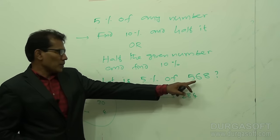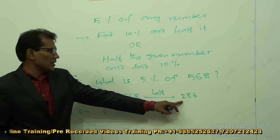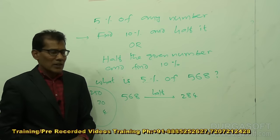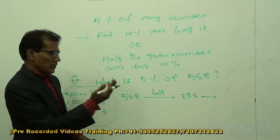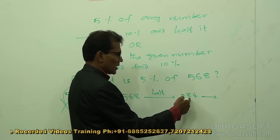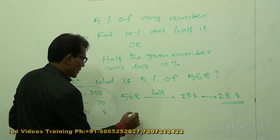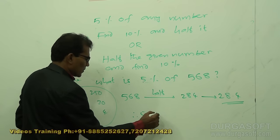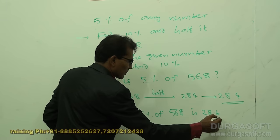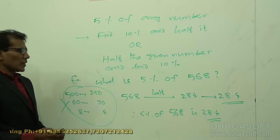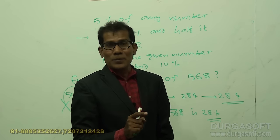Whenever the number does not end with 0, to calculate 5%: halve the given number and find 10%. Finding 10% means just placing a dot before one digit from the right, giving 28.4. Therefore 5% of 568 is 28.4. This everything should be done in the mind.